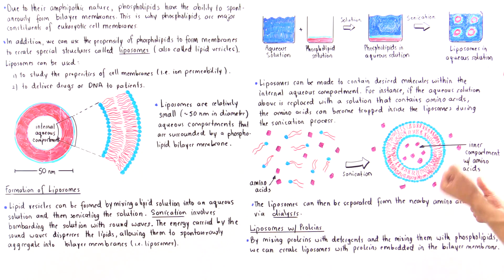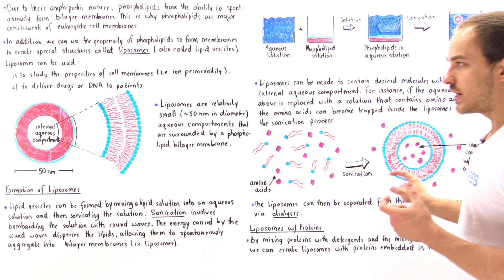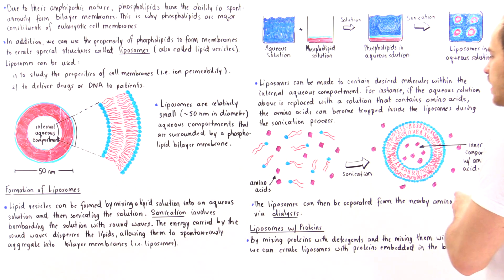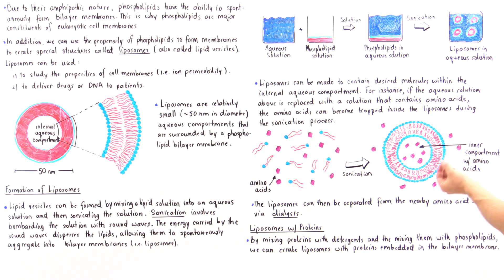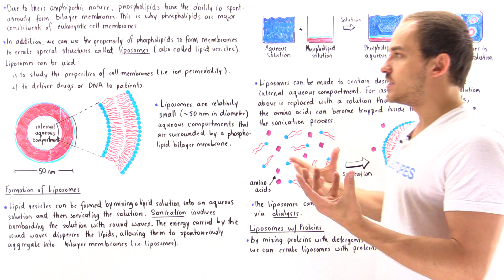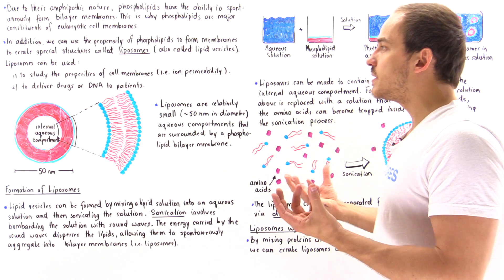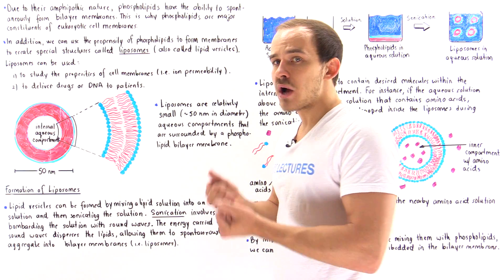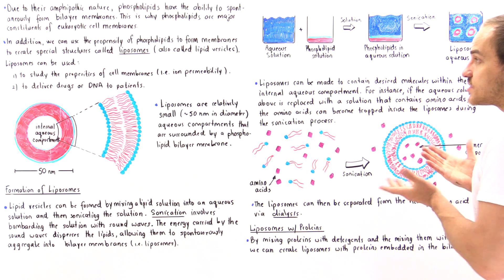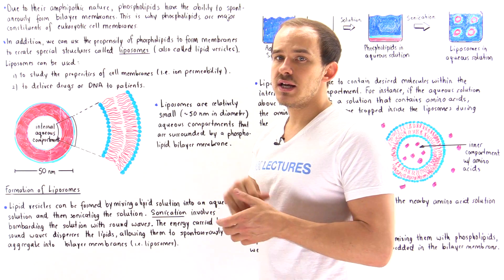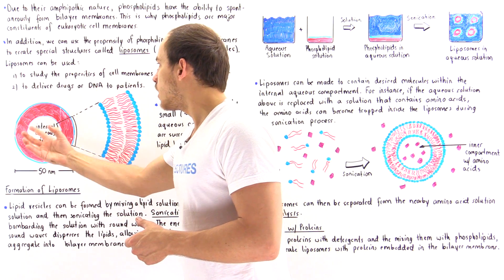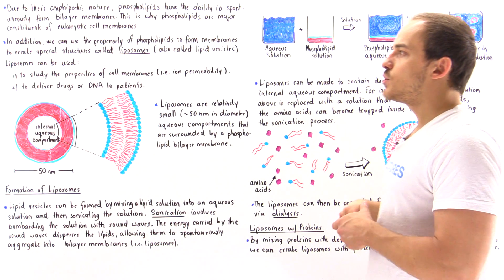We can then use those liposomes to study the rate at which the amino acids leave the cell membrane, which tells us the permeability of the cell membrane to that particular amino acid. We can conduct many different types of experiments to provide information about different properties of that membrane, such as its permeability.